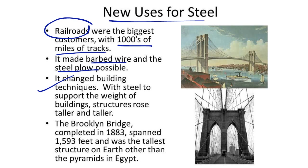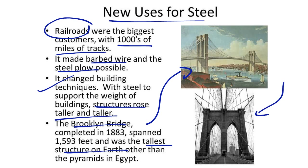Steel also changed building techniques. With steel to support the weight of buildings, structures were able to rise taller and taller. The Brooklyn Bridge, completed in 1883, spanned 1,593 feet and was the tallest structure on earth other than the pyramids in Egypt. The Brooklyn Bridge can be seen here, and you can see where the steel is used to support the weight of the bridge.